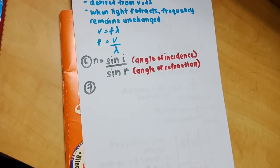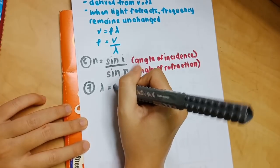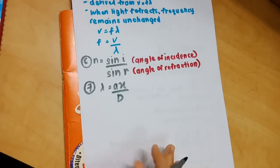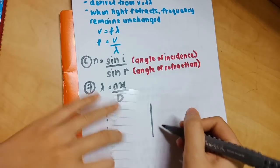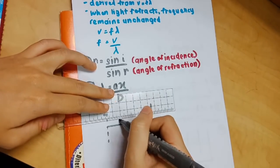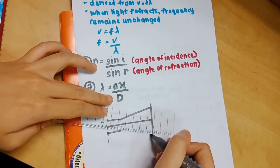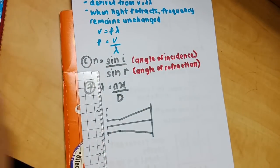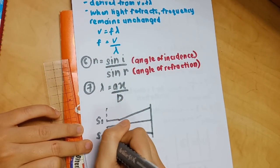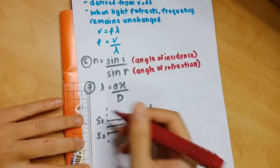Number 7 is a rather important formula: lambda equals ax over d. Again, I'm drawing a diagram to give you a better idea of how to use this formula, and I'm labeling a, d, and x at all the appropriate places.